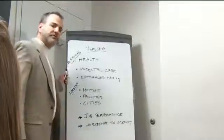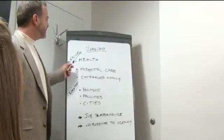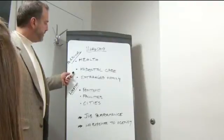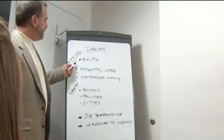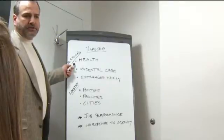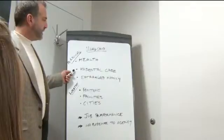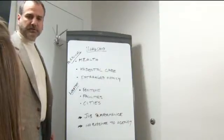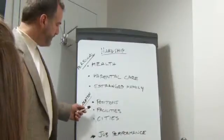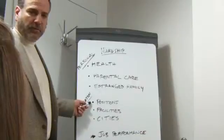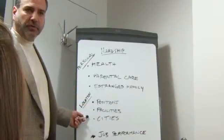Let's do that. The first factor is personal circumstances. The new labor agreement breaks hardship down into three broad categories: health, parental care, and estranged family. Health includes conditions for you, your spouse, or your child, and parental care applies to either your parents or your spouse's parents. Estranged family would be divorce-related situations where one parent moves a long distance away and the other parent is limited in their ability to see the children due to distance. The ages of the children and their health are also considered. Obviously in your case, the issue is dependent parent care. And part of the research you have to do on your own, as far as positions that you qualify for, would like to have facilities or cities near where you want to be.